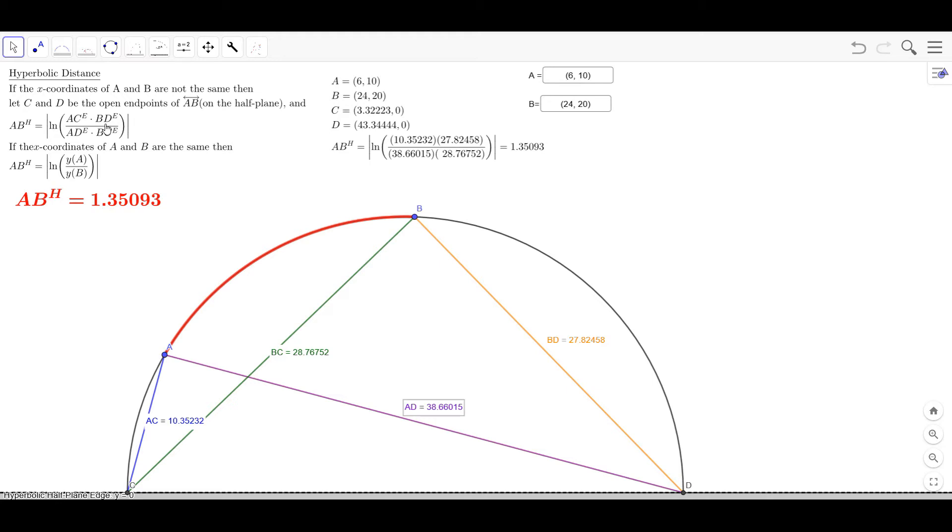So in any event that's the formula for it, and notice that as A approaches C this distance AC is approaching zero but the absolute value of the log of that is approaching infinity.